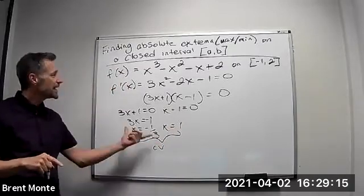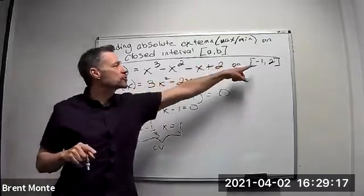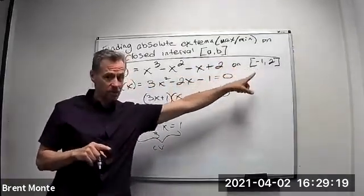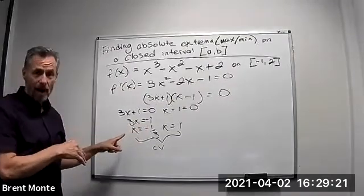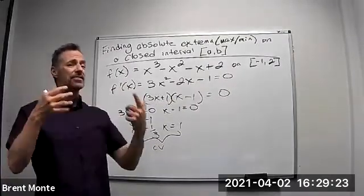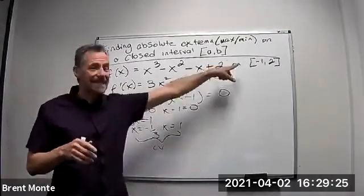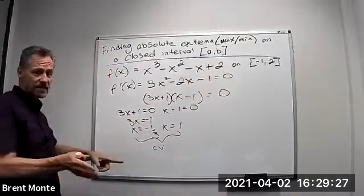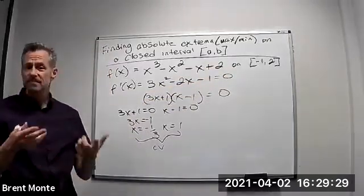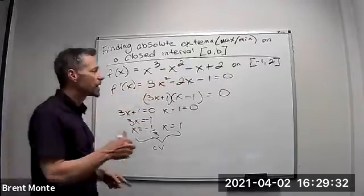All right, so now what I do, first I make sure those critical values are in the interval that I'm looking at. If they're not in there, I have to throw them out, because I'm only interested in the absolute maximum in that interval. So if this is outside, throw it out. It's not part of the answer, but these are both in that interval, so we're okay.